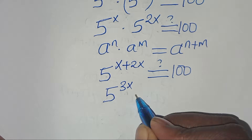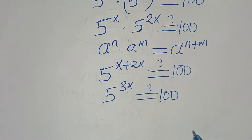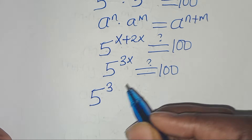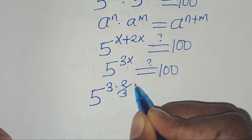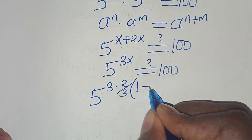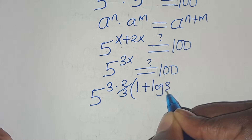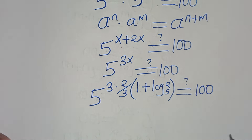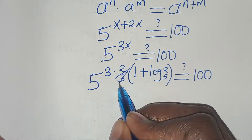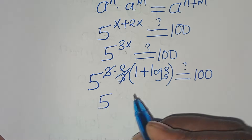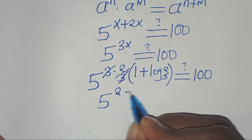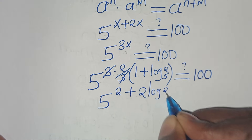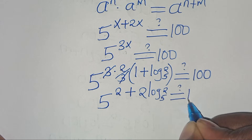Let's substitute x. We have 5 to the power of 3 multiplied by 2 over 3 times the quantity 1 plus log base 5 of 2, which should equal 100. Simplifying, this is 5 to the power of 2 times 1, which is 2, plus 2 times log base 5 of 2, giving 5 to the power of 2 plus 2 log base 5 of 2, which should equal 100.